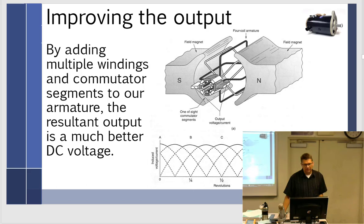It works, but not as well as it should. We can improve the output by adding multiple windings and multiple commutator segments. Now what happens is these commutator segments line up with the brushes so that it picks up just the high spot of every curve. Right as it starts to dip off, this is going to rotate and pick up on the next one. You're always just picking up the high side of the curve.